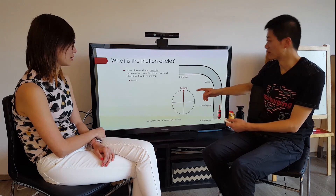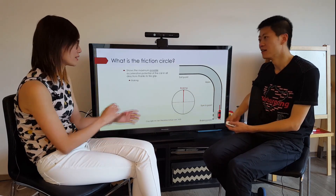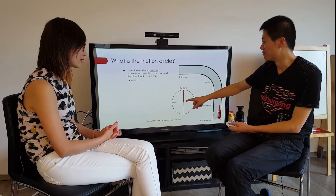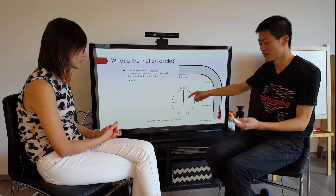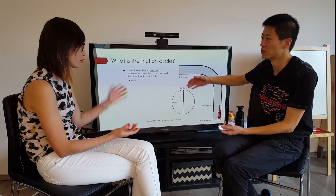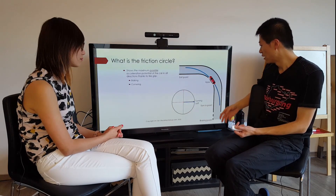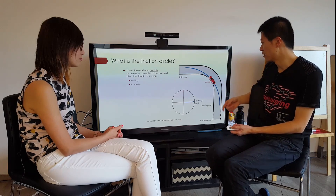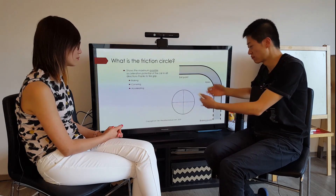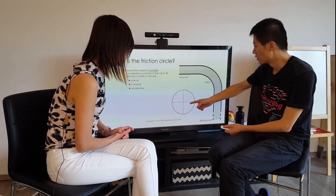The units are typically in g's — g as in gravity. For example, that could be one g in braking, and a faster car could have higher values. The friction circle determines how fast the car can brake, corner, and accelerate, so you want this to be as big as possible. The bigger it is, the more it helps all drivers.